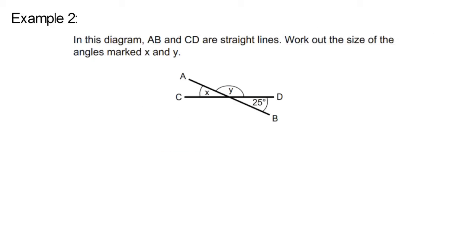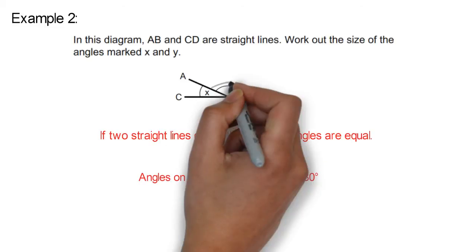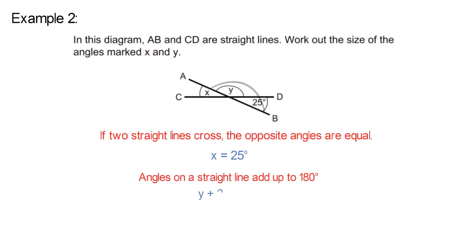Example 2. In the diagram, A, B and C, D are straight lines. Work out the size of the angles marked X and Y. We know that if two straight lines cross, the opposite angles are equal. So X equals 25 degrees. Angles on a straight line add up to 180 degrees. Y add 25 degrees equals 180 degrees. Y equals 180 degrees take away 25 degrees, which equals 155 degrees.